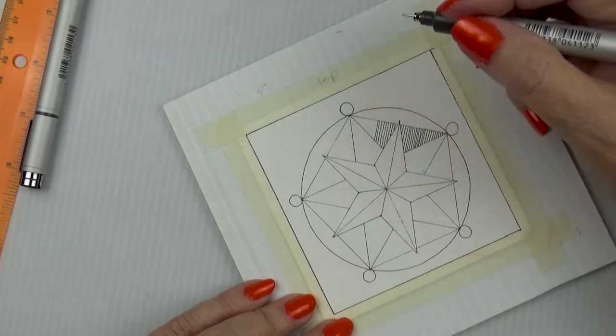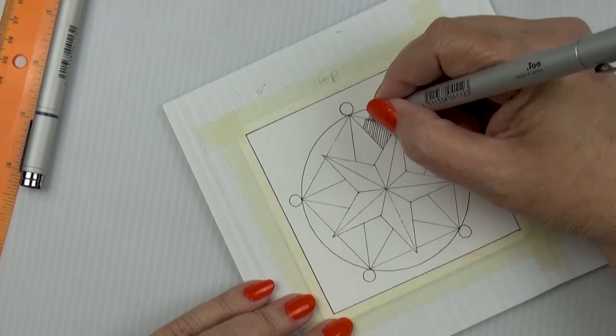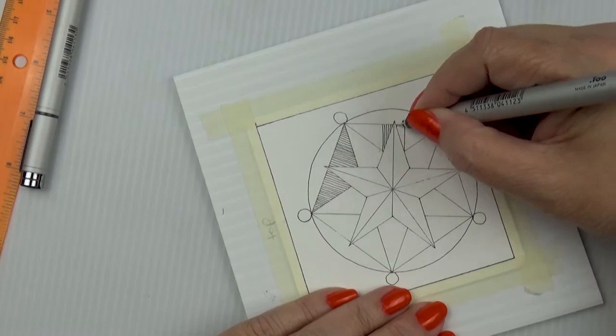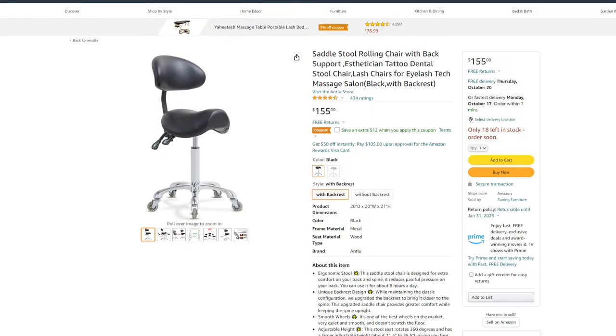Guess what I did? I bought a new chair for my studio, but it's not your average chair. It's a saddle stool. Here's what it looks like. It literally looks like a saddle on a stool.